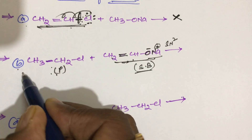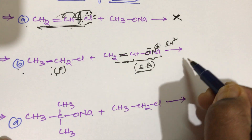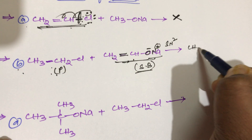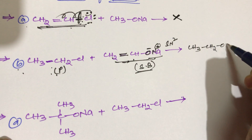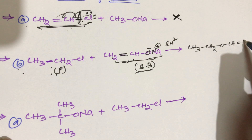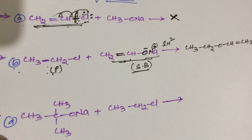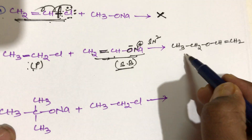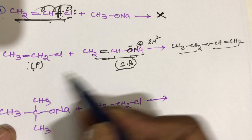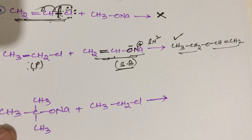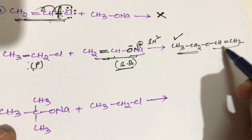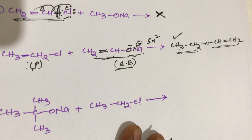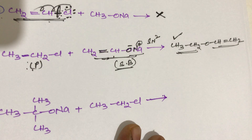What is the product? That is CH3-CH2-O-CH=CH2. This is the product. So compound B gives ethers. This is ethyl vinyl ether. This is a simple trick.